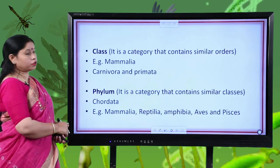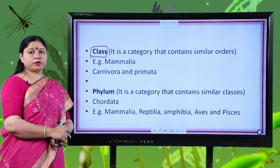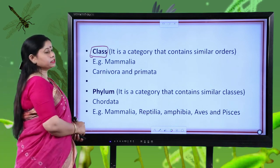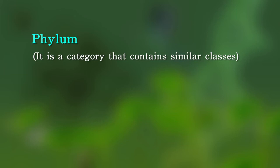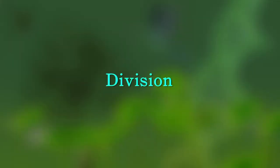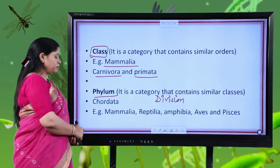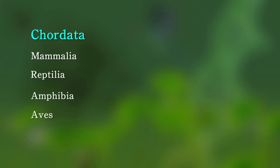The next taxonomic category is class — a taxon that contains similar orders. For example, class Mammalia contains order Carnivora and Primata, among others. Moving to the next category, phylum — a category that contains similar classes. In case of plants, we use the term division instead of phylum. For example, phylum Chordata contains various classes including Mammalia, Reptilia, Amphibia, Aves and Pisces.